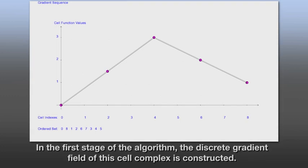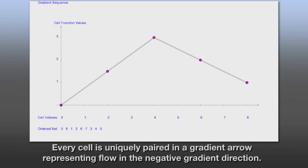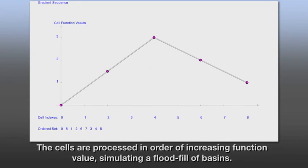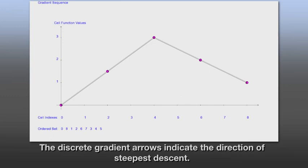In the first stage of the algorithm, the discrete gradient field of this cell complex is constructed. Every cell is uniquely paired in a gradient arrow representing flow in the negative gradient direction. These cells are processed in order of increasing function value, simulating a flood fill of basins. The discrete gradient arrows indicate the direction of the steepest descent.